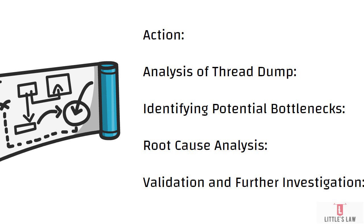The third part is root cause analysis. Based on the information extracted from the thread dump, you must proceed to perform a root cause analysis. This involves correlating the thread activity with other performance metrics collected from the application server, such as CPU data and memory usage data. This will help you gain a holistic understanding of the system's behavior and determine exactly what is happening.